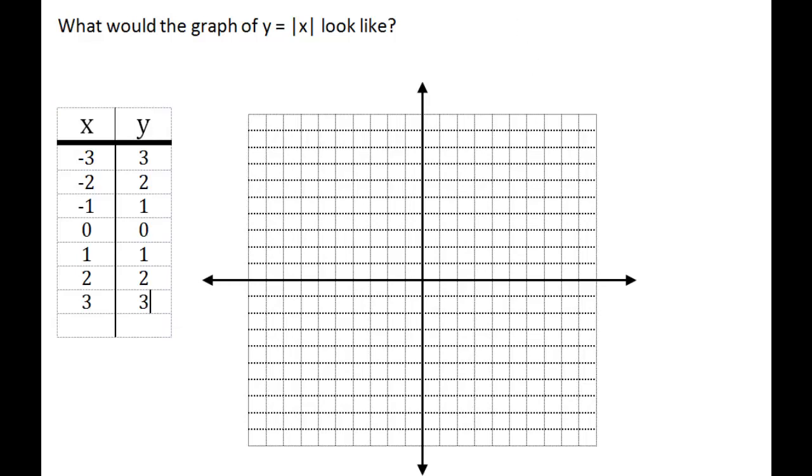Plotting that on the graph, when x is negative 3, y is positive 3. When x is negative 2, y is positive 2, and so forth, comes down to 0, 0, and then goes back up and continues on in both directions.